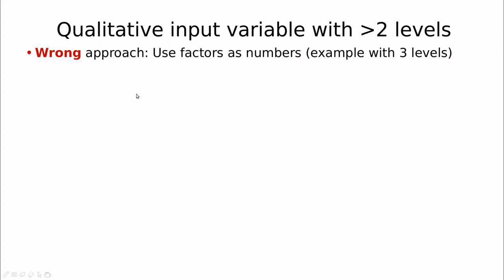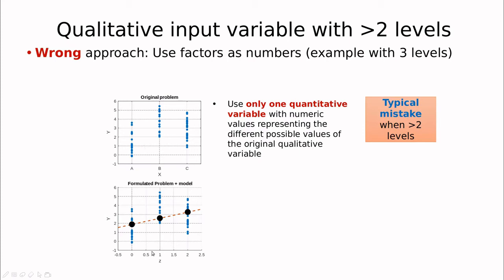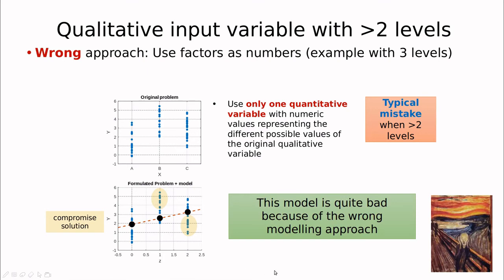So next question, what if we have a factor with more than two levels? The wrong approach would be use factors as numbers, for example, with three levels. Imagine that we have this information. So we have three categories, A, B, and C. As I was saying, the wrong way to approach this would be to consider A is 0, B is 1, and C is 2. Why is this a mistake? Because now there is no numerical relation between them. Before it was just arbitrary, so we could use 0 and 1 or minus 1 and 1. But now it doesn't mean that B is larger than A is the same as C larger than B. They are just different factors.